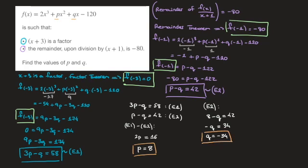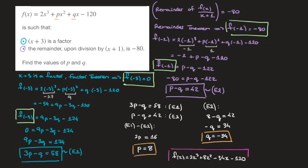Although we could stop there, it's good to finish by writing the function with the unknown coefficients replaced by the results found. So the final answer is f of x equals 2x cubed plus 8x squared minus 34x minus 120.